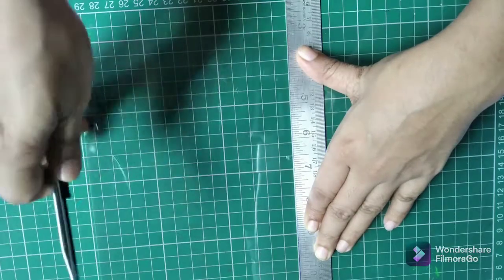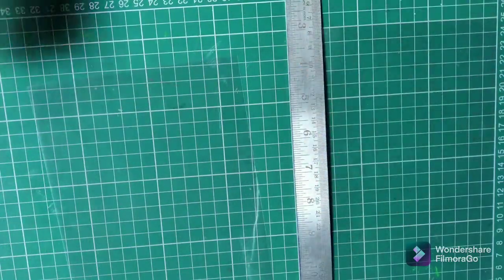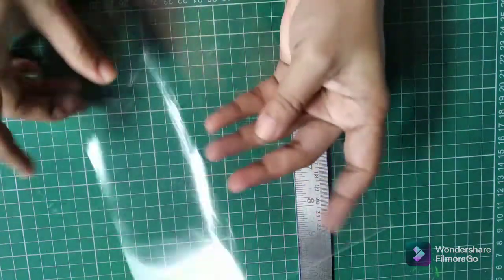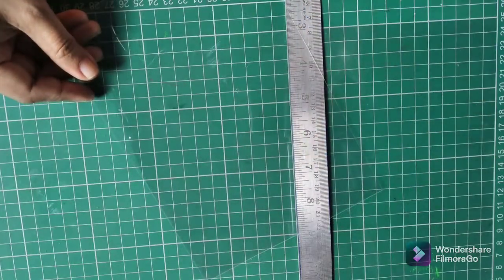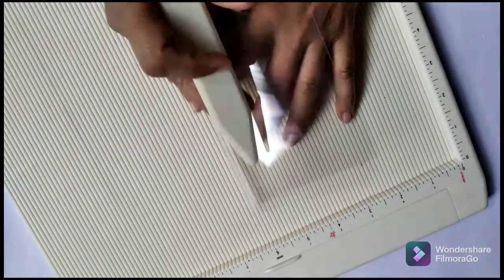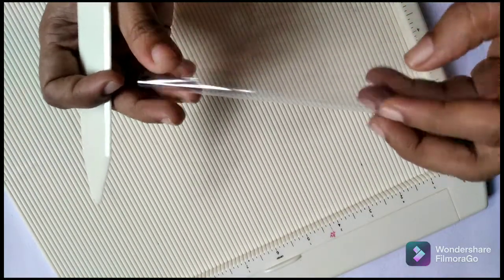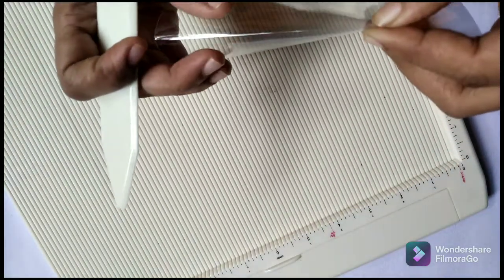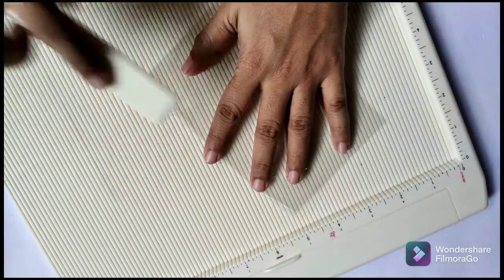This is an A4 size sheet, so I'm going to cut it into half and then fold it to make a card base. I take my scoring board and score it at the center to make it half. I use the bone folder to crease it.